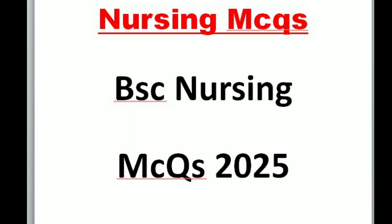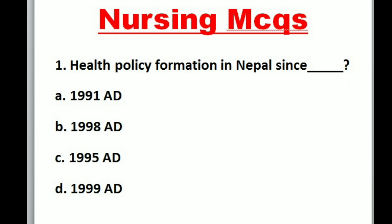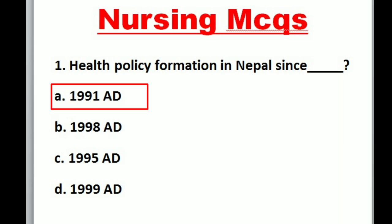BSC Nursing MCQ 2025. Question 1: Health policy formation in Nepal since under — A. 1991 A.D., B. 1998 A.D., C. 1995 A.D., D. 1999 A.D. Correct option is A: 1991 A.D.